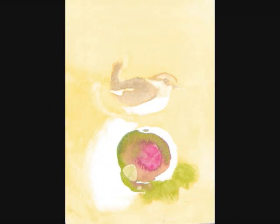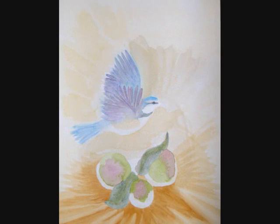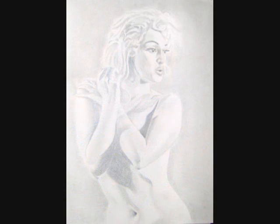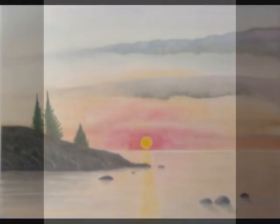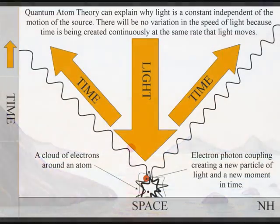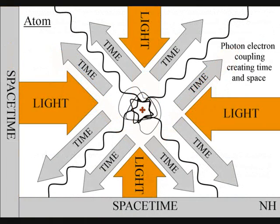This can also explain why light is so beautiful when it strikes an object. It is because we are looking at a moment of pure creation, of time and space. Because this is a continuous process, at the same speed that light moves, the expanding wave function of light between the atoms will always be a universal constant, independent of the motion of the source.